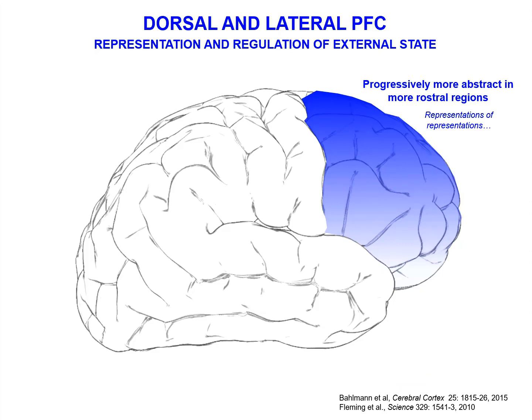Brain imaging data suggests that these abilities are topographically organized such that progressively more abstract functions occur more rostrally. We have simpler representations more caudally — for example, just remembering a position in space — and representations of representations as we go more rostrally. For example, our metacognitive abilities such as insight and moral conscience are concentrated in the frontal pole.